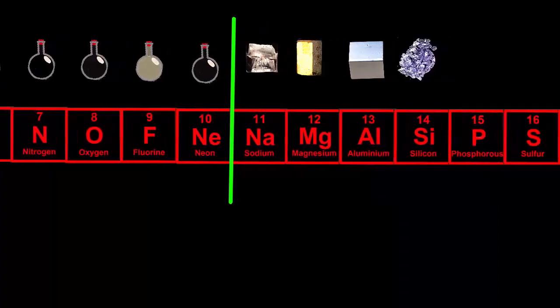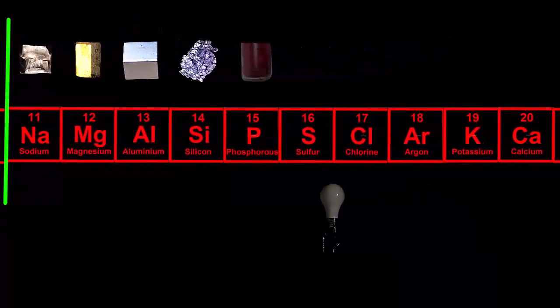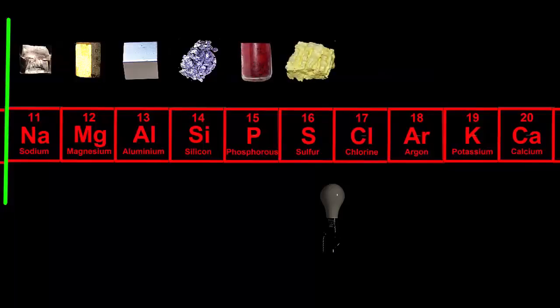Further to the right are four non-metals which don't conduct electricity at all: phosphorus and sulfur, which are brittle solids, and chlorine and argon, which are gases.